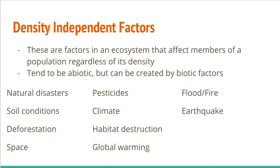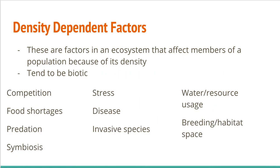Contrast this with density dependent factors. These are things that are determined by population density. So competition — the denser the population, the more competition there is. Food shortages are probably going to be more acute in areas with greater population density. Predation, symbiosis, and stress from interacting with each other as well as having to find resources constantly are also density dependent.